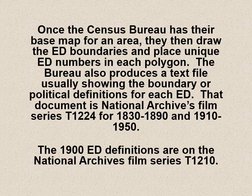Once the Census Bureau has their base map for an area, they draw the ED boundaries — usually in orange, at least in 1950 — and place unique ED numbers in each of those polygons. The Bureau also produced a text file showing boundary or political definitions for each enumeration district. That document is the National Archives Film Series T-1224 for 1830 to 1890 and 1910 to 1950 — something useful you need to know about.